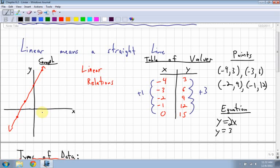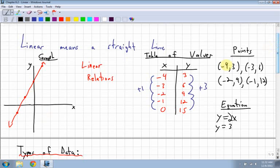What lines look like. As long as the x's are going up by the same amount, as long as the y's are going up by the same amount, that's the big key with the table of values and the points.